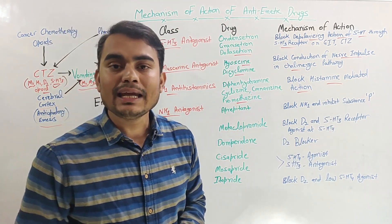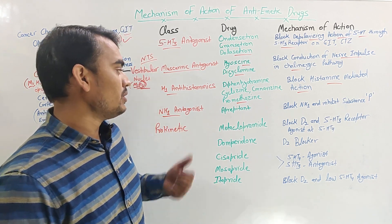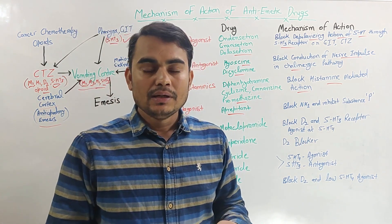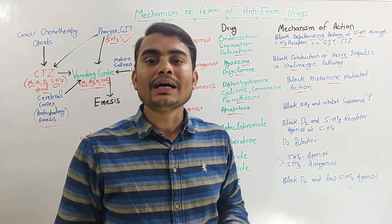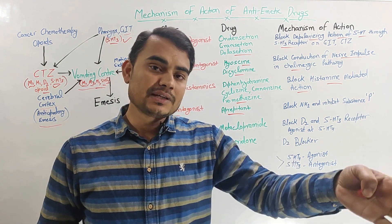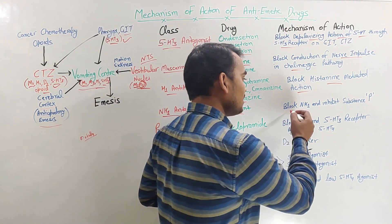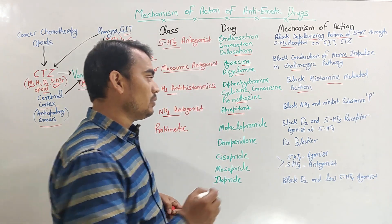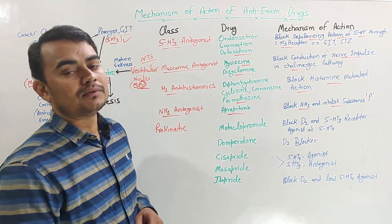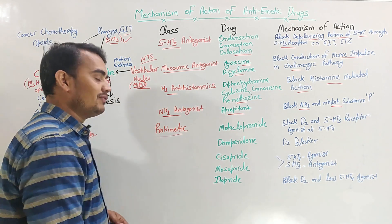The next class is NK1 receptor antagonists — this is a newer class. The example drug is aprepitant. The NK1 receptor is a neurokinin receptor; when stimulated, it causes the release of substance P, which further stimulates emetic action. The NK1 antagonist blocks the NK1 receptor, inhibits substance P release, and thereby inhibits the emetic action.